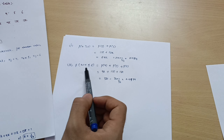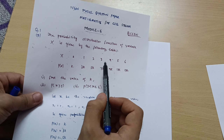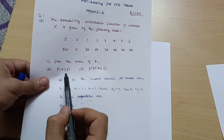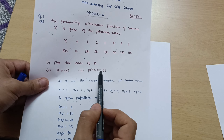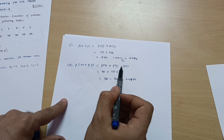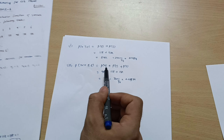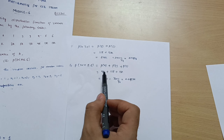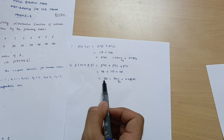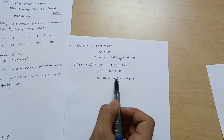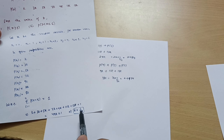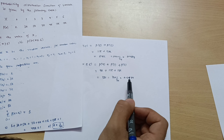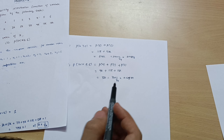For part three, P(3 < X ≤ 6): the numbers greater than 3 and less than or equal to 6 are 4, 5, and 6. So we calculate P(4) + P(5) + P(6) = 9k + 11k + 13k = 33k. Multiplying 33 by k = 1/49 gives 33/49, which equals approximately 0.6734.